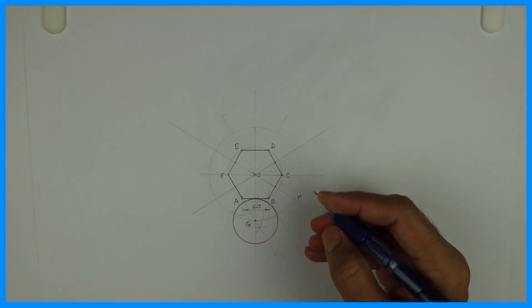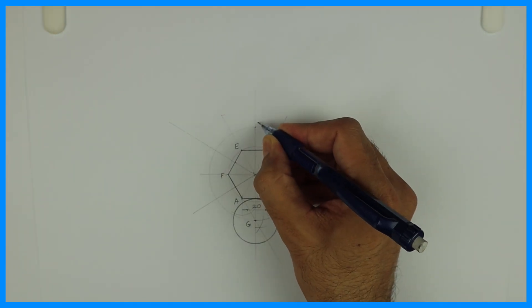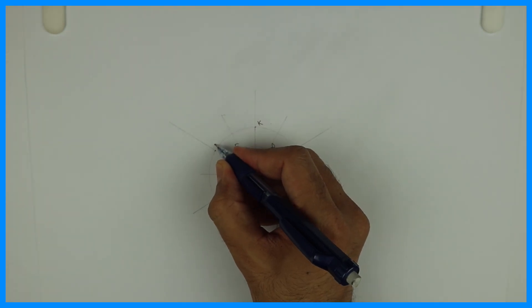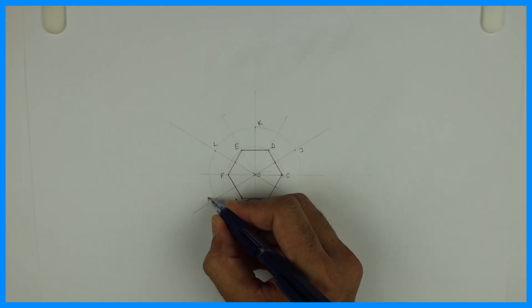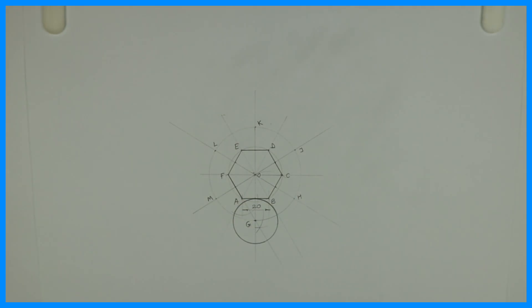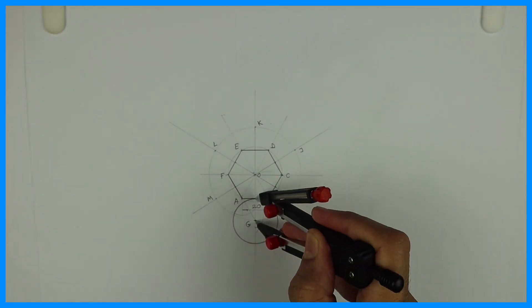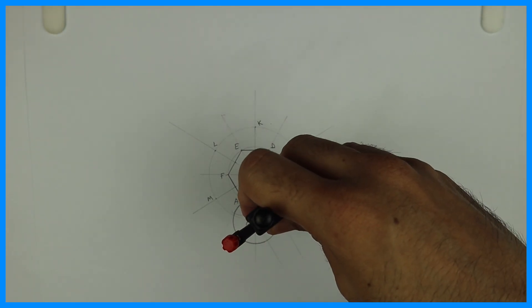It will be H, J, K, L, M. Now we'll take this radius and from M we'll draw a circle.